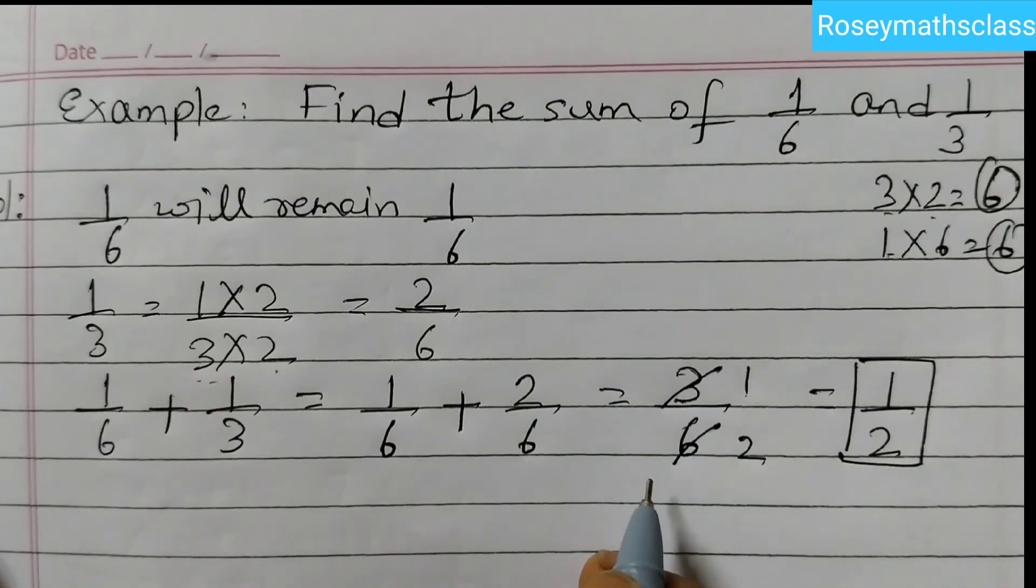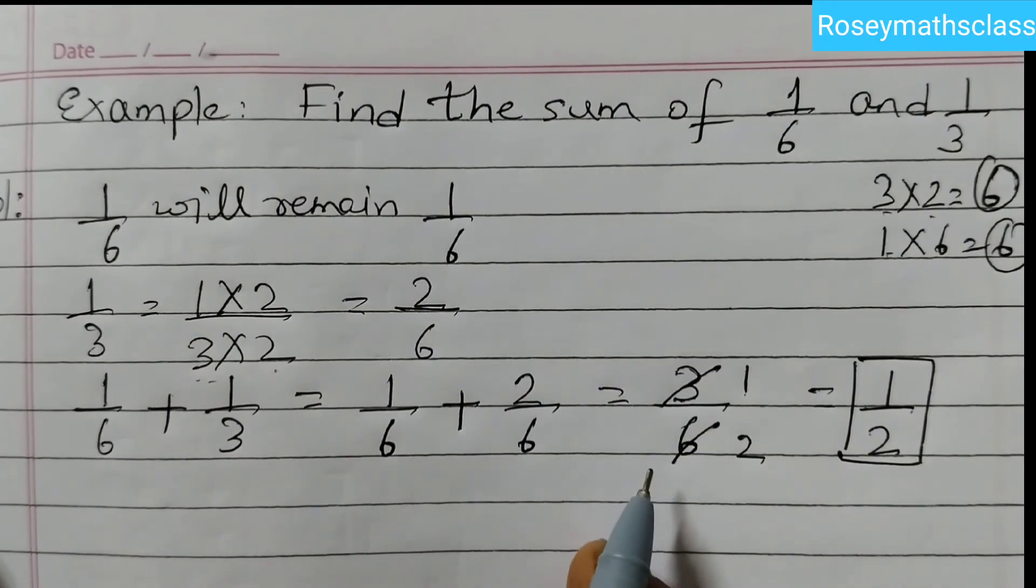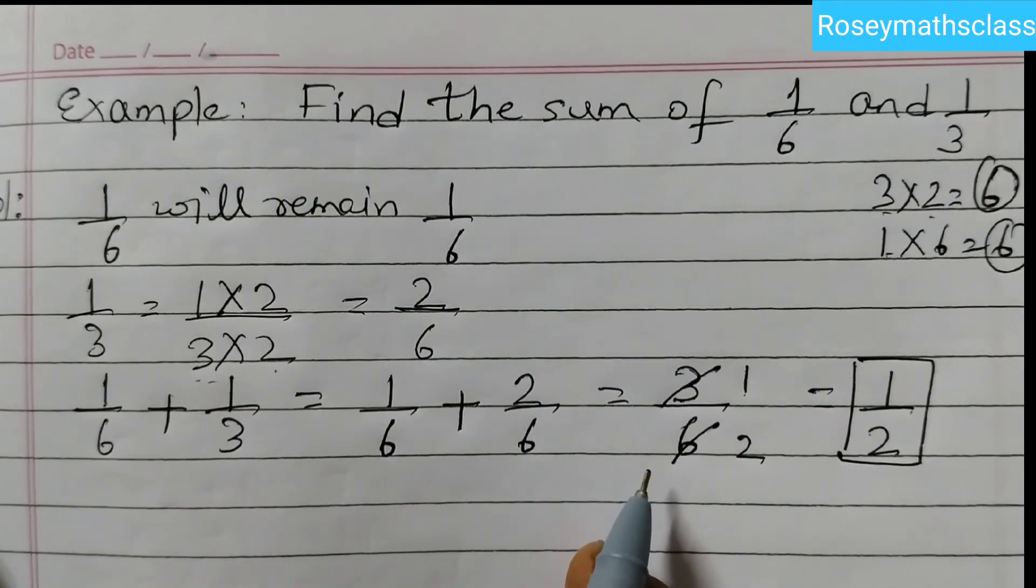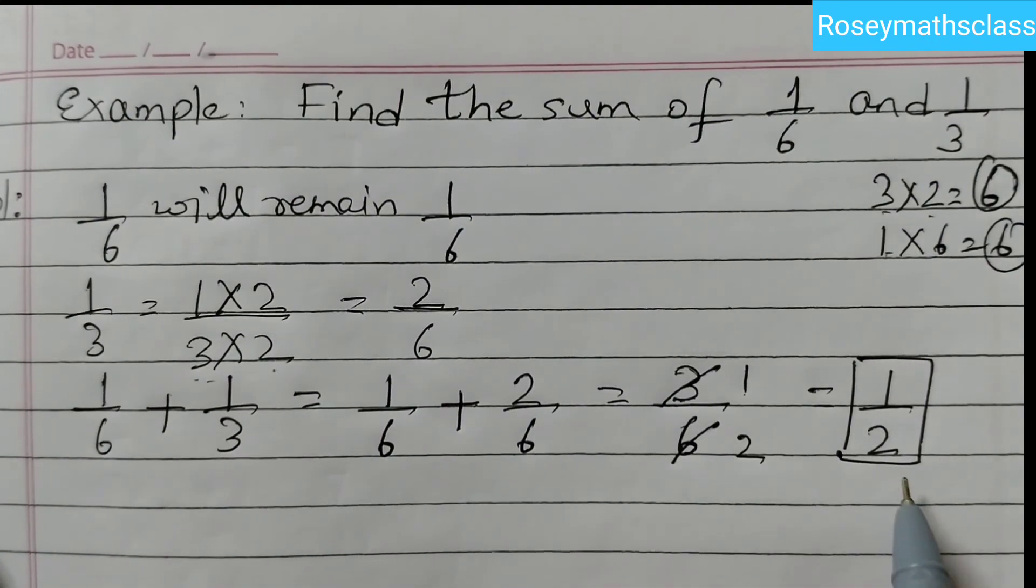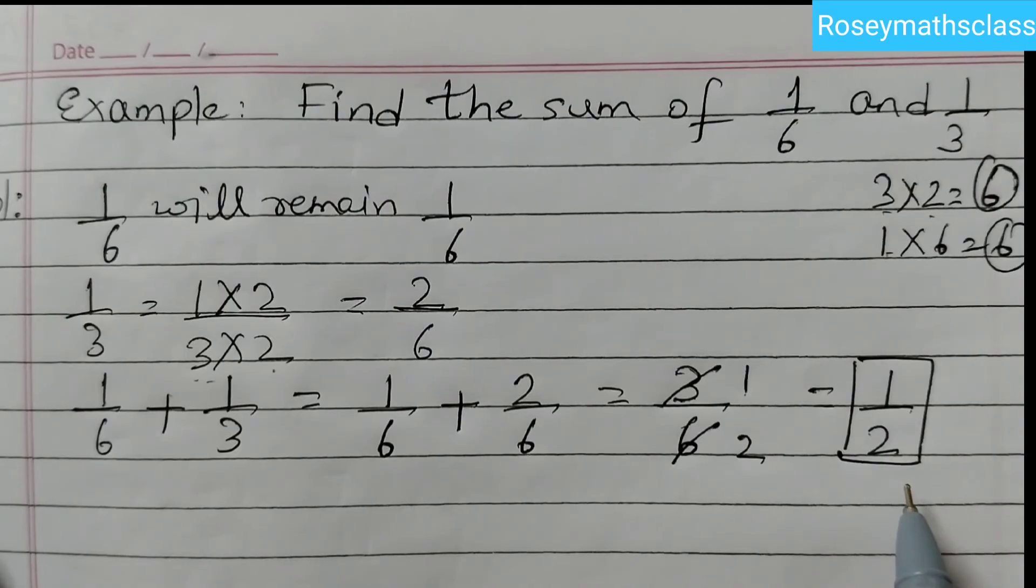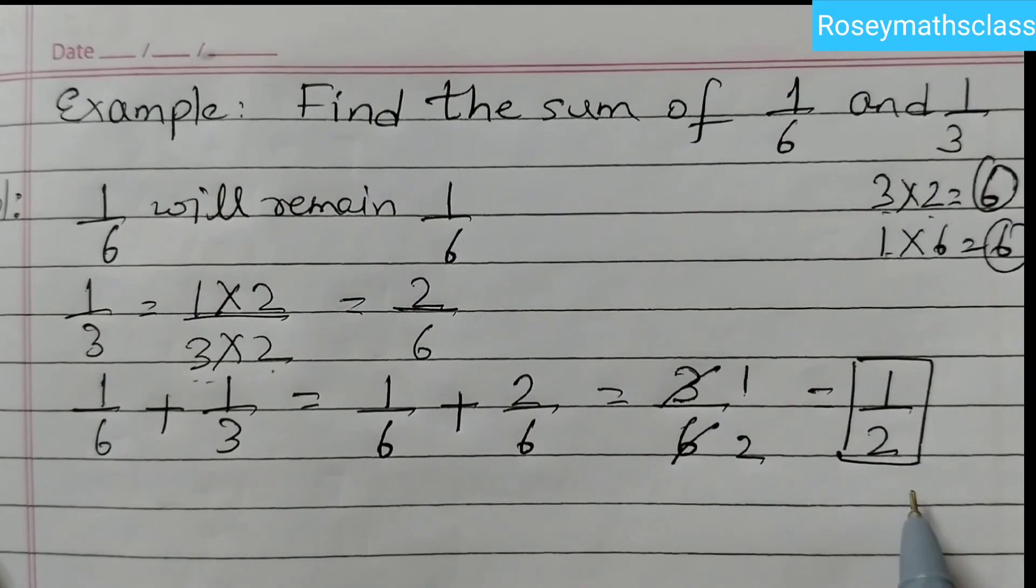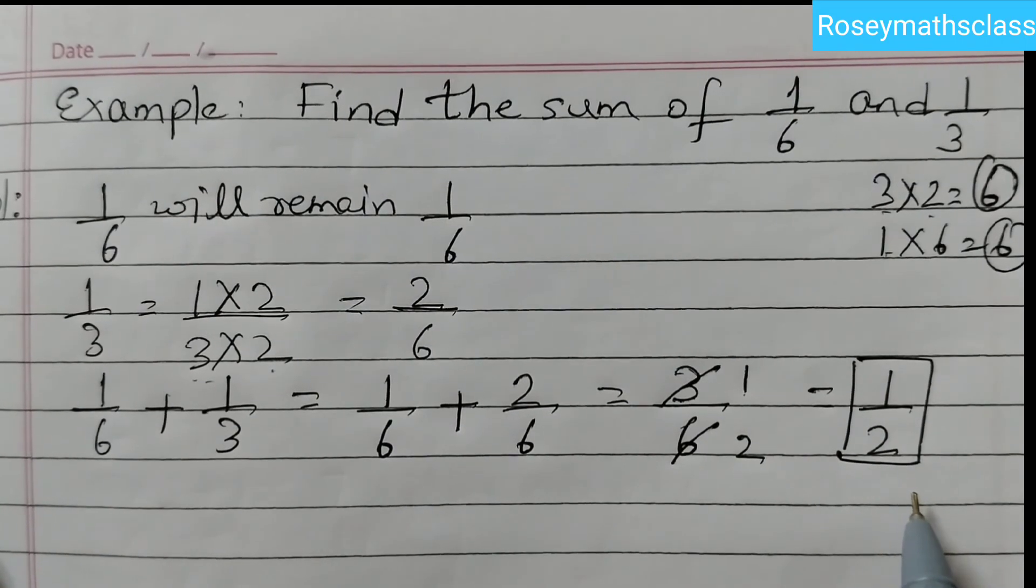So wherever we are able to do cancellations or you have some common factors in the numerator and denominator, you need to factor it out, that is do cancellations and write the final answer. So here the answer is 1 by 2. I hope this is clear to all. Thank you.